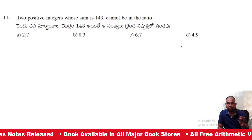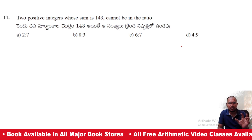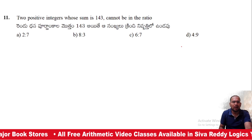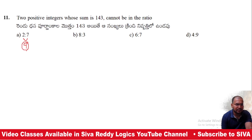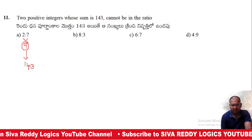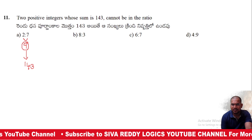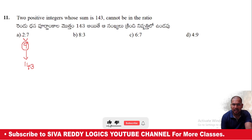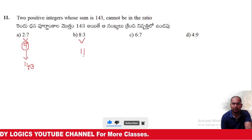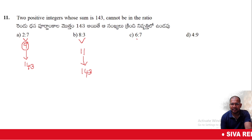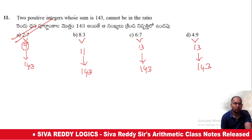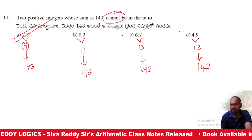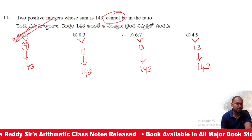Eleventh question: Two positive numbers whose sum is 143 — which ratio cannot they be in? Checking: 9 parts total — 143 divided by 9 gives remainder 53, so not exact. Then checking 11 parts and 13 parts: 143 is exactly divisible by 11 and 13. Option D will be the right answer.